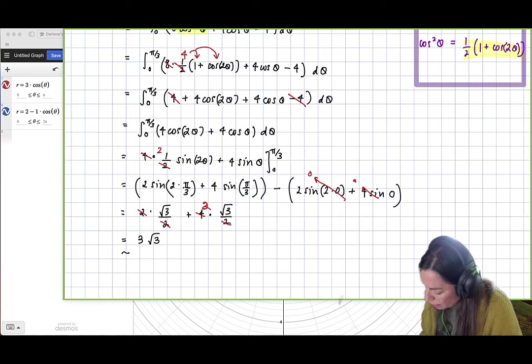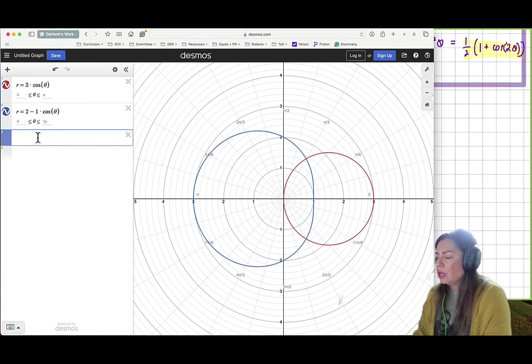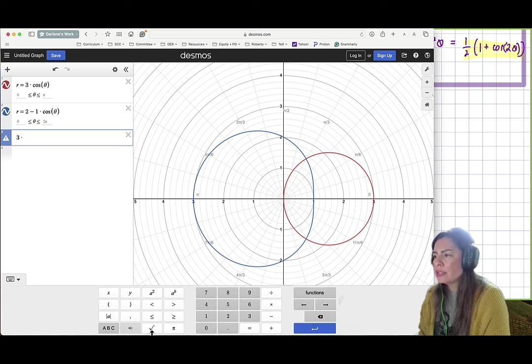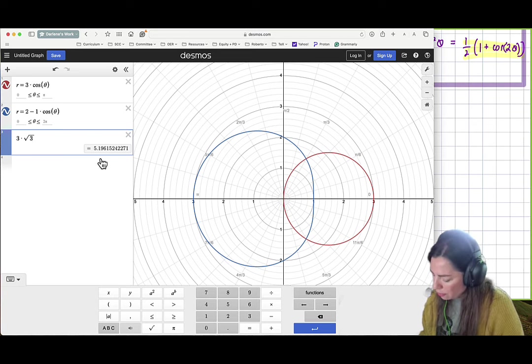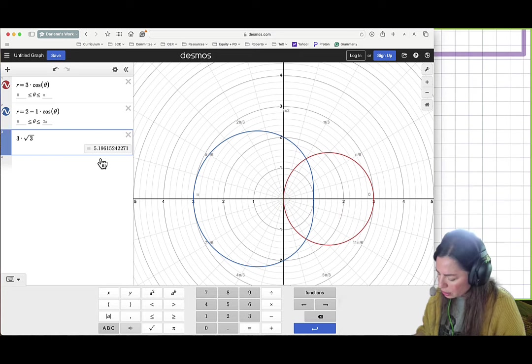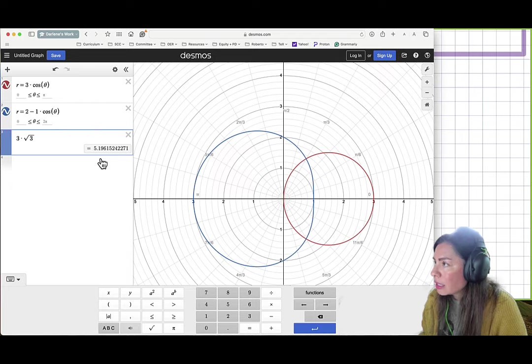And if I went ahead and back to Desmos and just put this in the calculator, 3 times and then the square root of 3, if you go ahead and show this keypad, you'll see a little radical symbol on that bottom. And put in a 3 and sure enough, it gives you 5. And I have to round to 4 decimal places. So 5.1962.